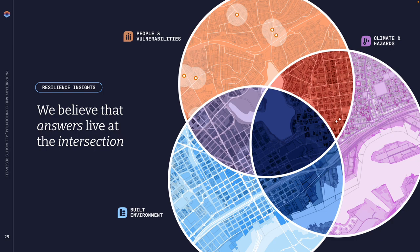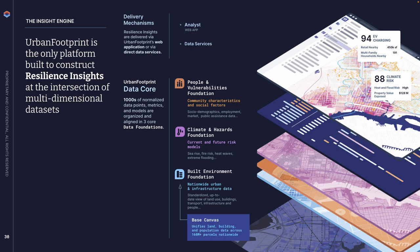We typically work in three domains related to community, climate and hazards, and the built environment. We believe the answers lie at the intersection of those domains. A lot of this data comes in geospatial formats — we ingest a ton of it into our systems and literally intersect them to provide answers for various questions. We build data products oriented around those domains and ingest a ton of geospatial data to produce insights.